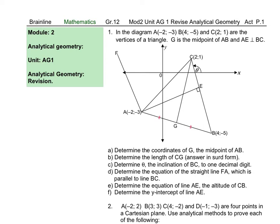We will now have a look at what is expected of you in this activity. Question 1: we are given a diagram with three coordinates that are vertices of the triangle. G is the midpoint of AB and AE is perpendicular to BC.